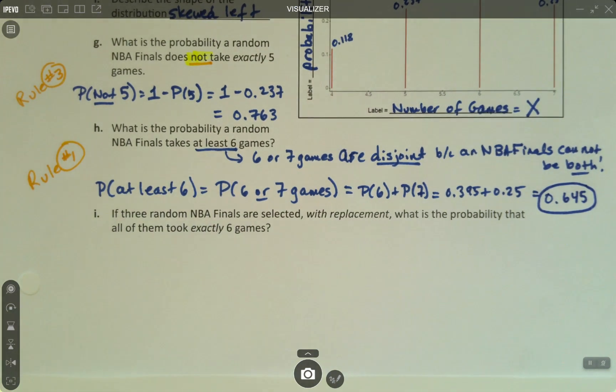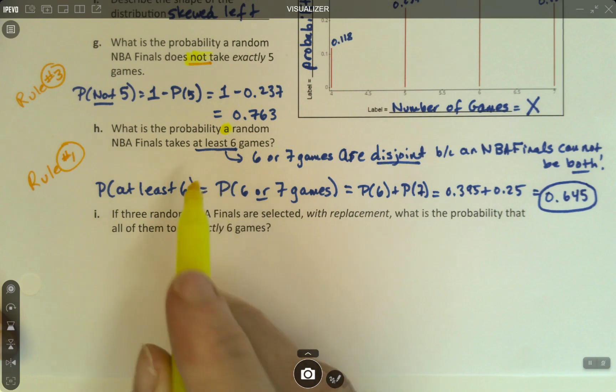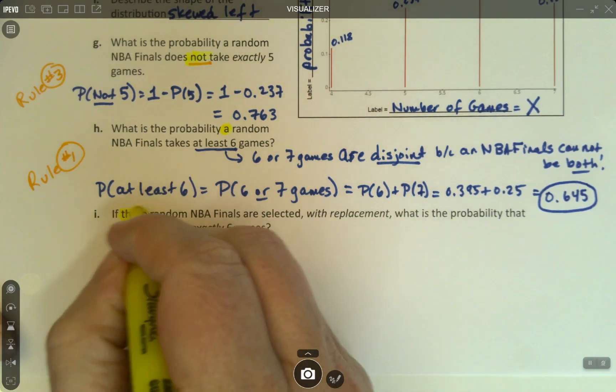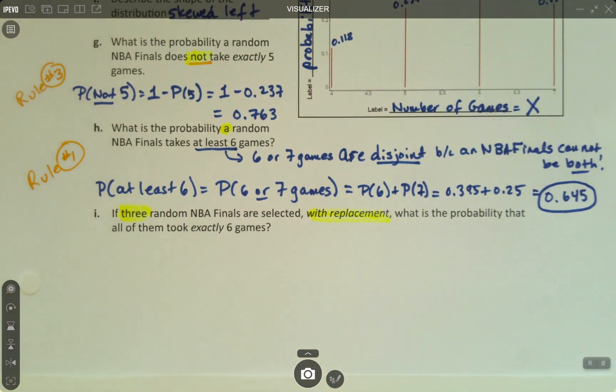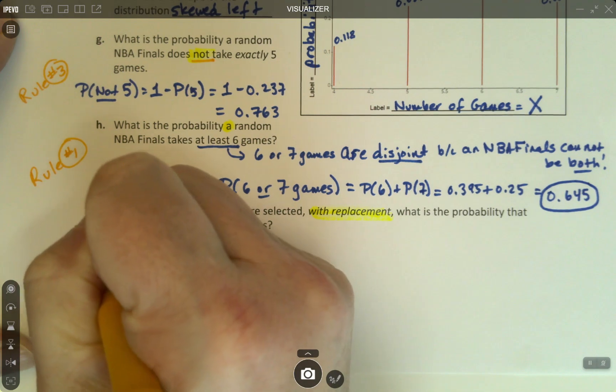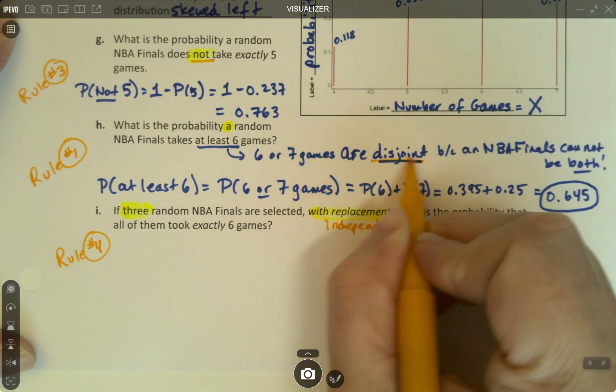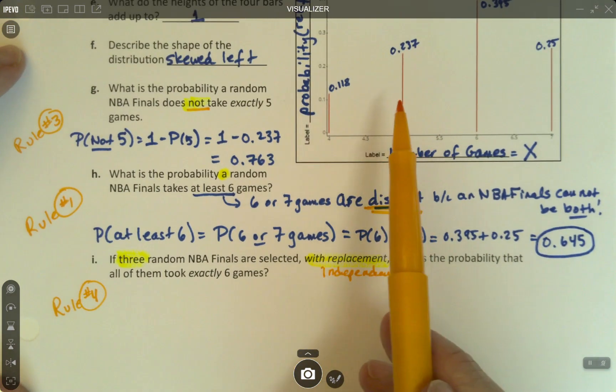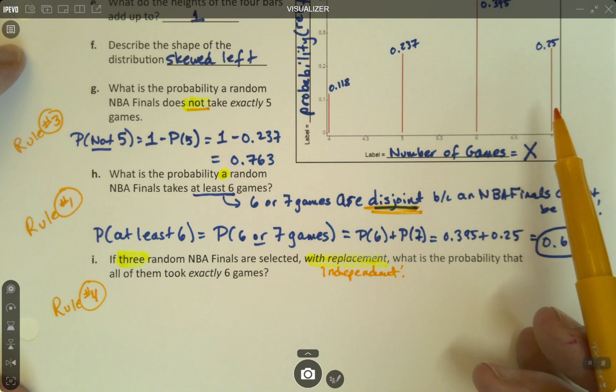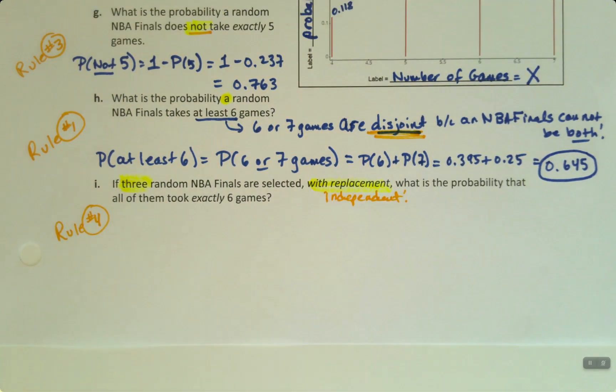This was a random, so it had to be rule one, two, or three. Because it's a single game. Whereas down here, it's talking about three games with replacement. That's rule number four, the multiplication rule. These are independent, as opposed to up here where it was disjoint. This is independent because one NBA Finals taking five games has no effect on the next NBA Finals taking six games. They have no relevancy to each other because they're selected with replacement.